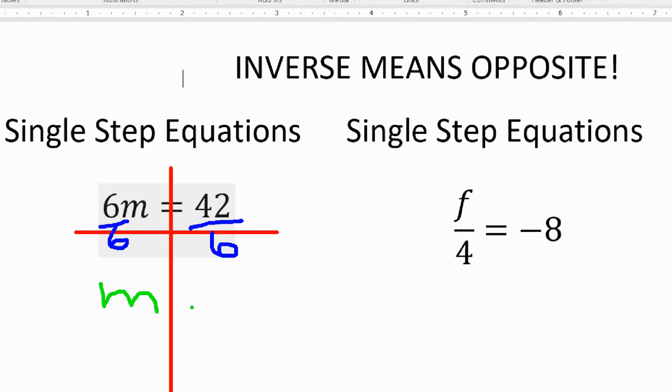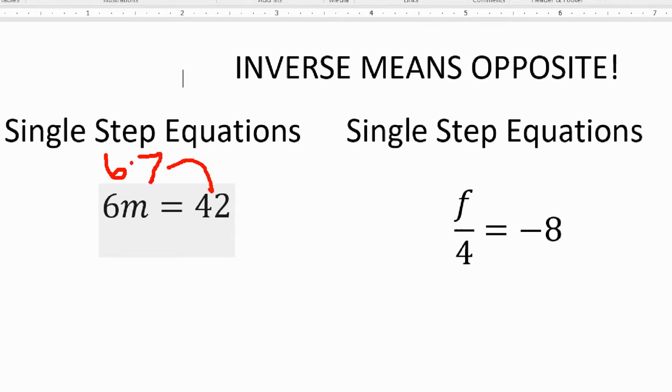42 divided by six on the other side is seven. And there's my answer. m equals seven. How do I know? Because if I go back to the top, six times, I said seven, is 42. You know you're right.